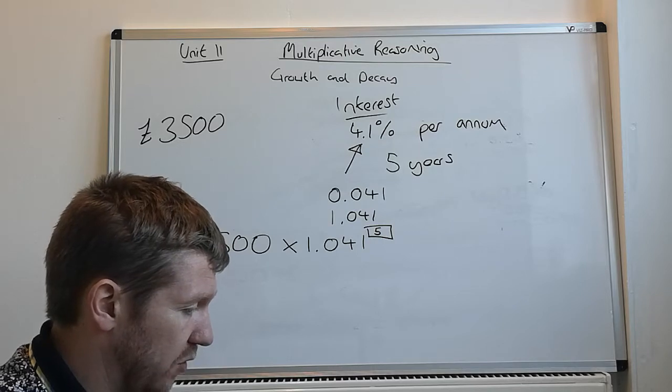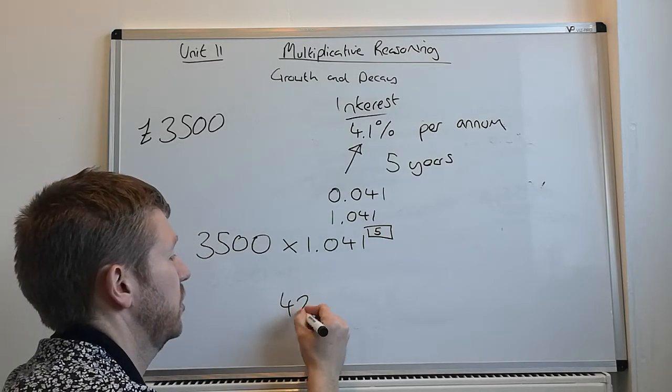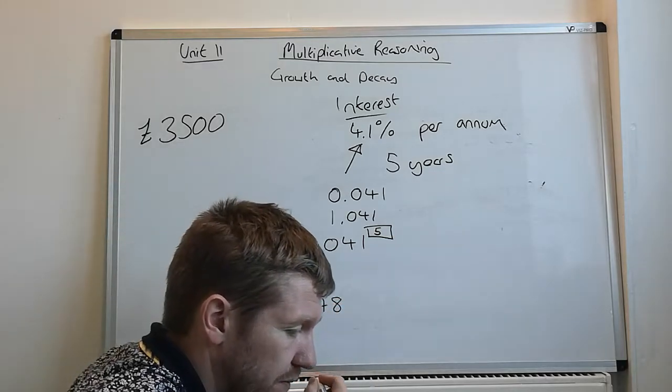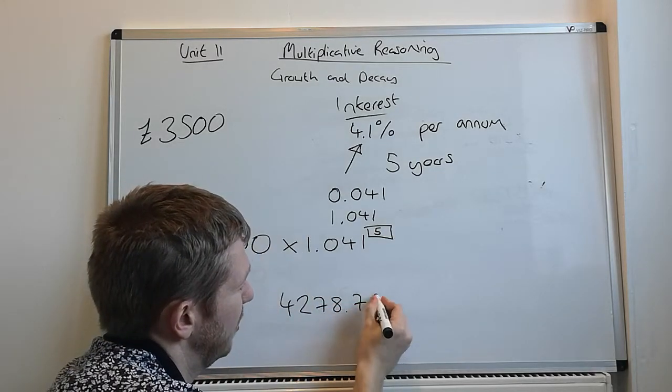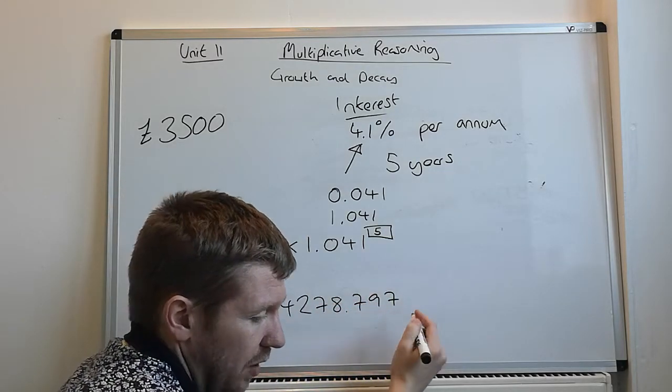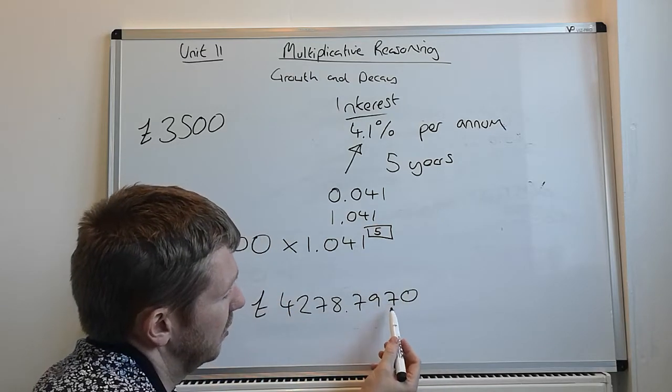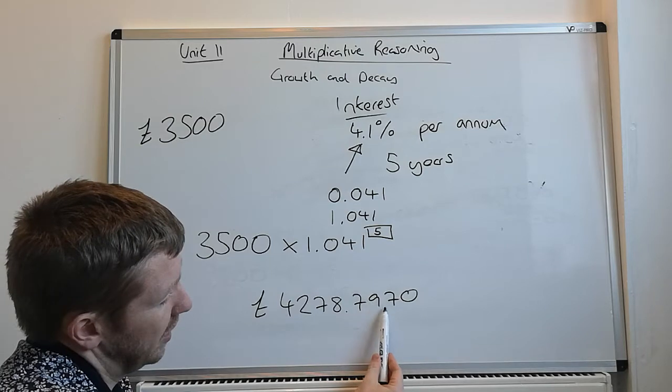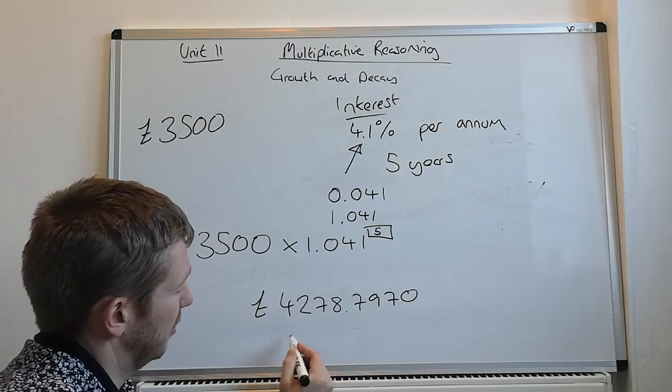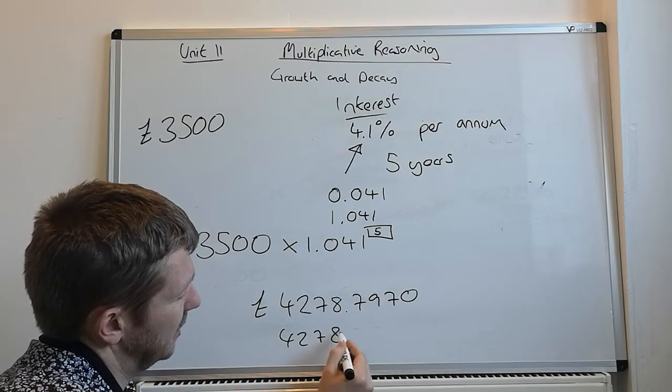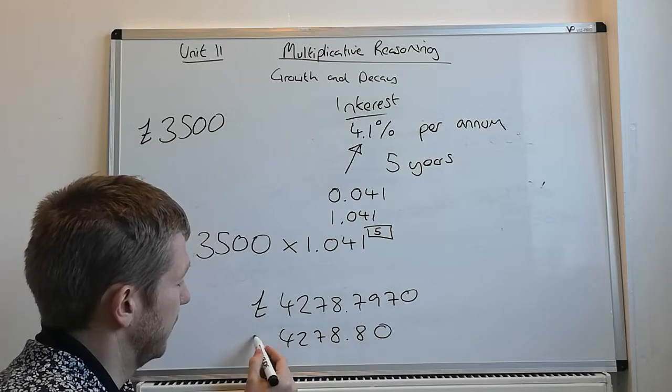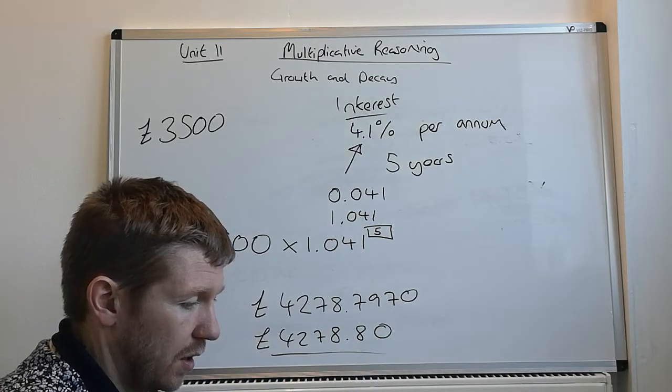So, 3,500 times by 1.041 to the power of 5, and that gives you 4,278 pounds and 797 and so on. So, we need to think about how we round this up. It's money, so probably 2 decimal places. 7 rounds up 9. So, let's go with 4,278 pounds and 80.